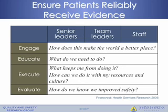Now that you've identified these barriers and targeted your interventions to address the most prominent ones in your ICU, we want to make sure patients reliably get the evidence they're supposed to. We do that by walking through the four E's: engaging people, educating, executing, and evaluating. There are three groups of stakeholders who need to go through these four E's: your senior leaders, that is senior executives; team leaders, the unit directors and managers; and then all of your staff.